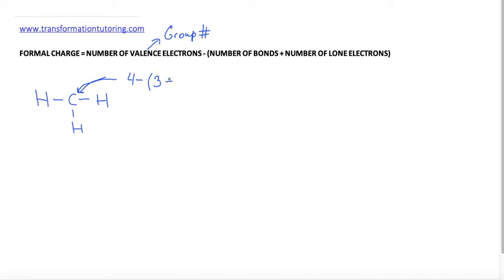And how many lone electrons does it have? We do not see any lone electrons, so we will put 0. 4 minus 3 is equal to 1, or plus 1. So we will go ahead and put plus 1 on our carbon.